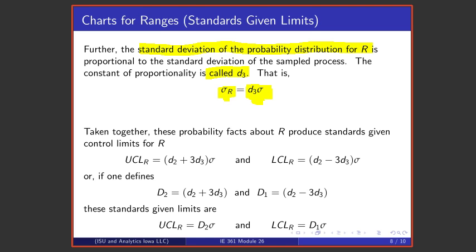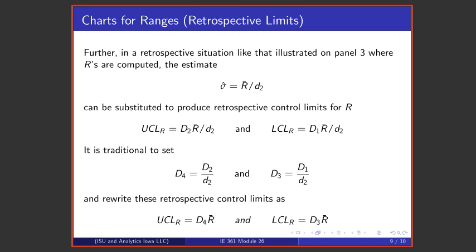If you take these probability facts about R together, it then makes sense that one would set an upper control limit for R at d₂ times sigma plus 3d₃ times sigma, a lower control limit for R at d₂ times sigma minus 3d₃ times sigma. And if one then agrees to call little d₂ plus 3d₃ big D₄, and little d₂ minus 3d₃ big D₃, one is left with standards given control limits for ranges that are of the form big D₄ times sigma and big D₃ times sigma.